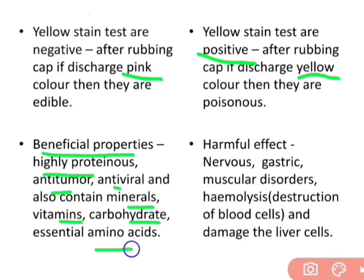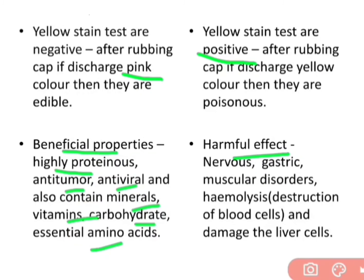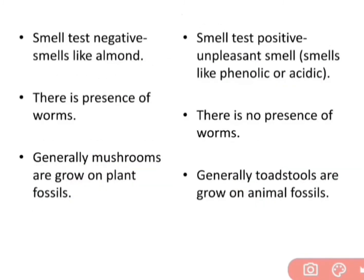Harmful effects of poisonous mushrooms include nervous, gastric, and muscular disorders, hemolysis (breaking of blood cells), and damage to liver cells. Smell test: edible mushrooms have a negative smell — they smell like almonds. Poisonous mushrooms have a phenolic or acidic smell which is quite unpleasant — smell test is positive in poisonous mushrooms.